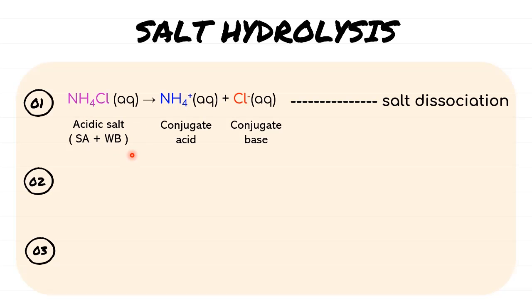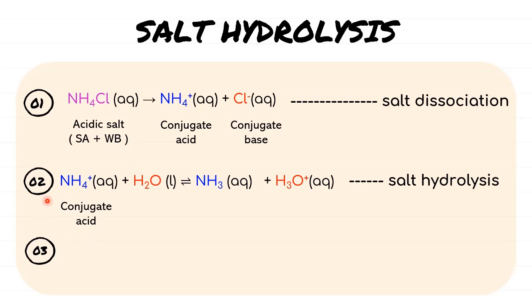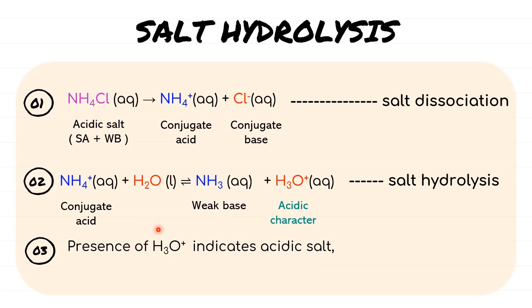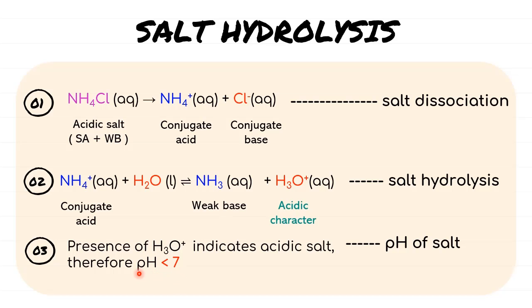Species that dissociate partially from its initial solution — which in this case is the weak base — will be the one that undergoes hydrolysis with water. So we'll take NH₄⁺, which is the conjugate acid, to react with water to form its original base used here, which is the weak base, together with H₃O⁺. Note that H₃O⁺ indicates that this salt still has acidic character. Lastly, we need to give reasoning based on the second step. Since we have H₃O⁺ present in our salt hydrolysis reaction, the pH of the salt solution is going to be less than 7. That's how you reach the conclusion on what kind of salt is formed and its pH.